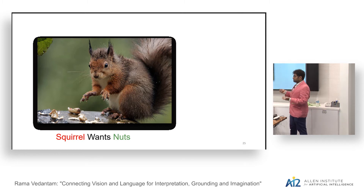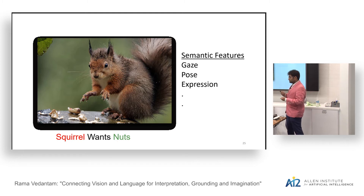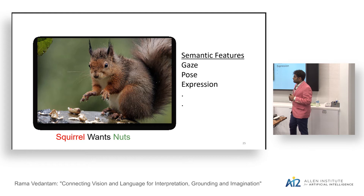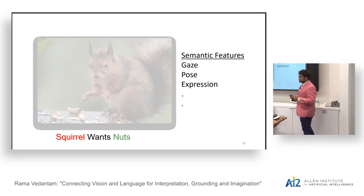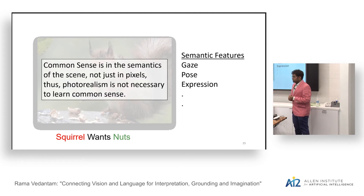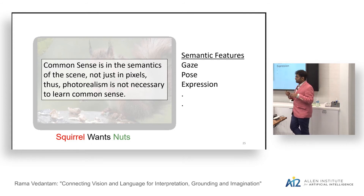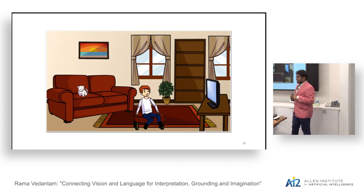Even with recent progress in vision, it's not trivial to extract such rich semantic features from images. So we sidestep this issue by realizing that common sense is not in the exact pixels but in semantic features. We use abstract scenes made from clip-art objects to learn common sense knowledge. For our evaluation dataset, we take sentences from MS COCO, run the ReVerb open information extraction tool to get primary-relation-secondary tuples, and pair each relation with a random noun to sample likely implausible scenarios.